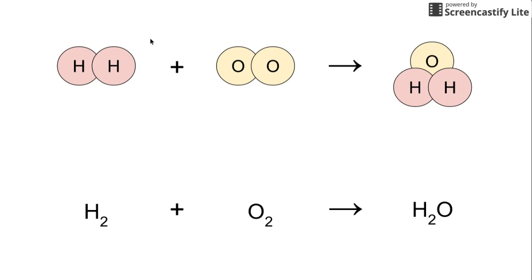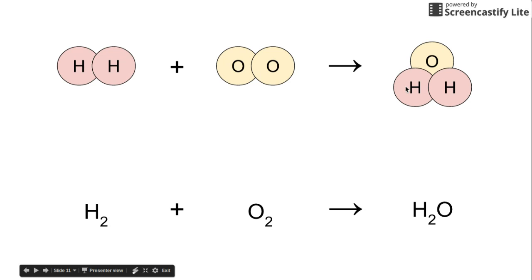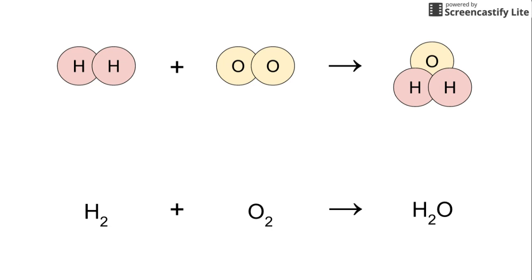We can go ahead and fill that in to keep it in line with the chemical equation shown below. Now, one way to think about balancing equations is that we have to ensure that the number and types of atoms on the reactant side are equal to those on the product side. This gets back to the conservation of mass — we can't simply lose or create mass. So if we have two H's on this side, we have to have two H's on the other side.